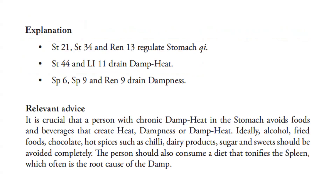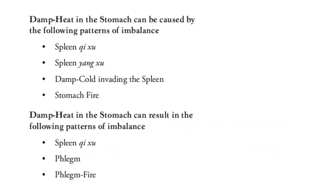Relevant advice: a person with chronic damp heat in the stomach must avoid foods and beverages that create heat, dampness, or damp heat. Ideally, alcohol, fried foods, chocolate, hot spices such as chili, dairy products, sugar, and sweets should be avoided completely. The person should consume a diet that tonifies the spleen, which is often the root cause of the damp. Damp heat in the stomach can be caused by: spleen chi deficiency, spleen yang deficiency, damp cold invading the spleen, and stomach fire. It can result in: spleen chi deficiency, phlegm, and phlegm fire.